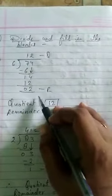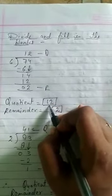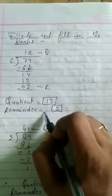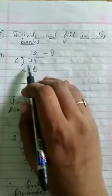Next question, divide and fill in the blanks. Here it is given quotient dash. Quotient is equal to blank box. Remainder is equal to box is given in your book. So we have to divide 74 by 6.